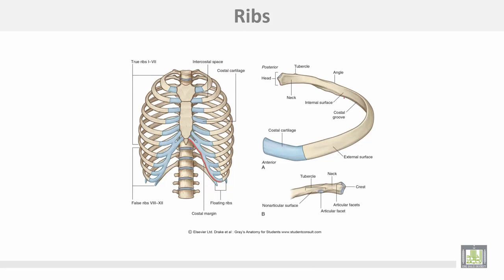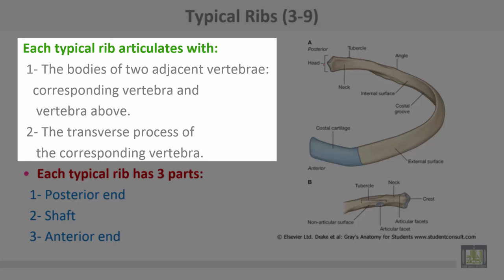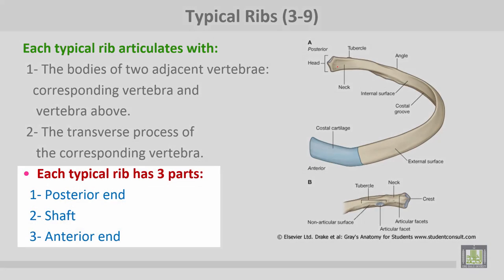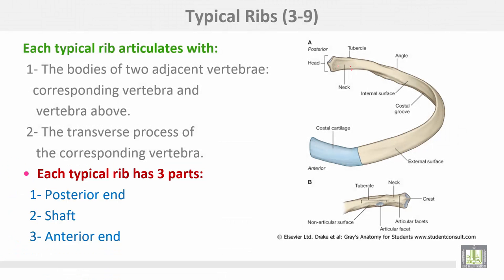A typical rib has a posterior end consisting of the head, neck, and tubercles. The upper border is blunt and the lower border is sharp. The anterior end articulates with the costal cartilages. Each typical rib articulates with the bodies of two adjacent vertebrae — the corresponding vertebra and the one above — and with the transverse process of the corresponding vertebra. A typical rib has three parts: the posterior end, shaft, and anterior end.